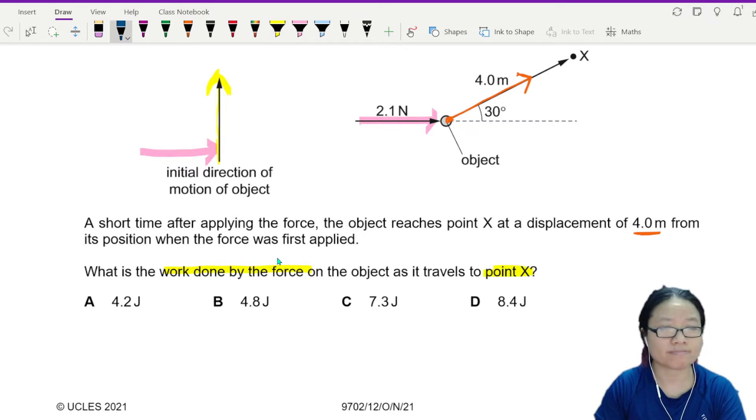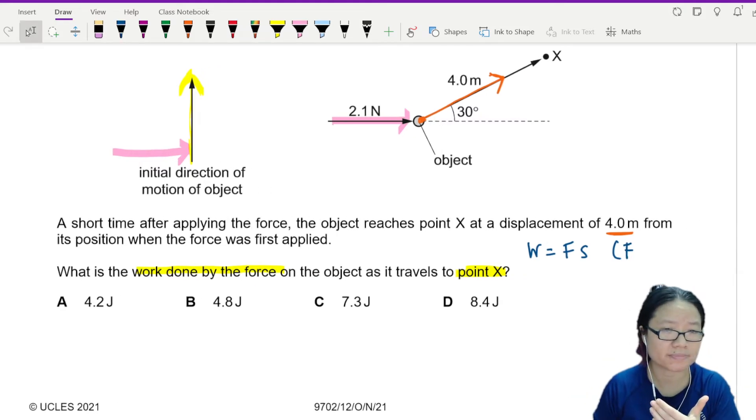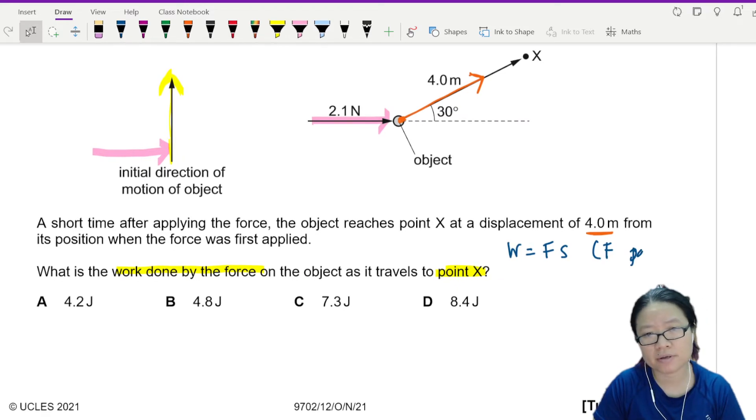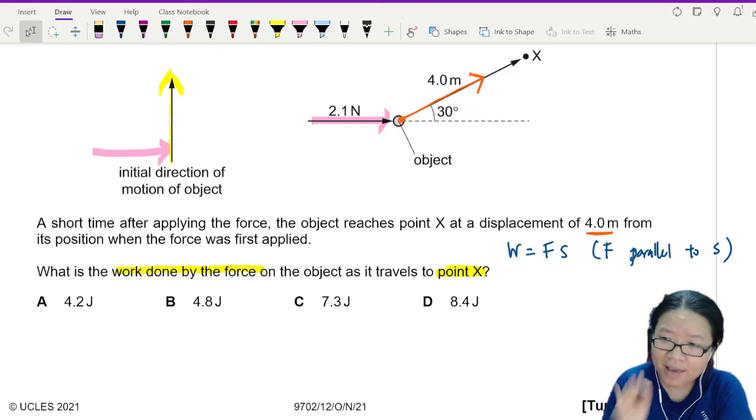You want to find work done? W. Immediately we think about FS. But we have to remember that F and S, force and displacement, are parallel to each other. So F parallel to S. So if F is parallel to S, the force and displacement is parallel.